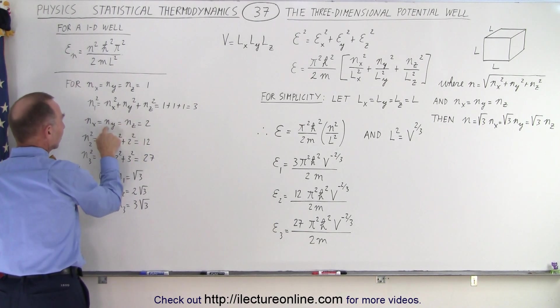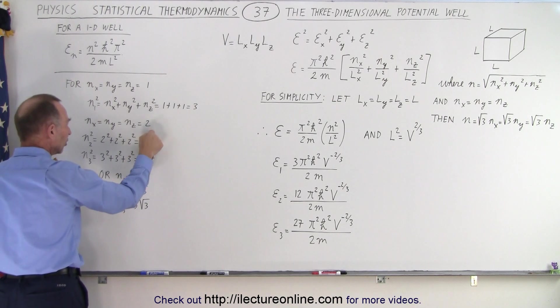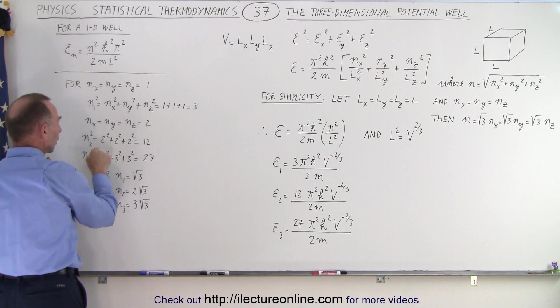When n sub x equals n sub y equals n sub z equals to two for the second energy level, then n sub two squared will be two squared plus two squared plus two squared, or twelve.